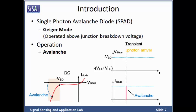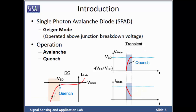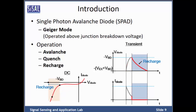At this point, a large avalanche current will flow due to this effect and needs to be stopped by lowering the diode voltage below breakdown — this is called quenching. For cyclic operation, we need to recharge the diode to the breakdown voltage plus the excess bias.